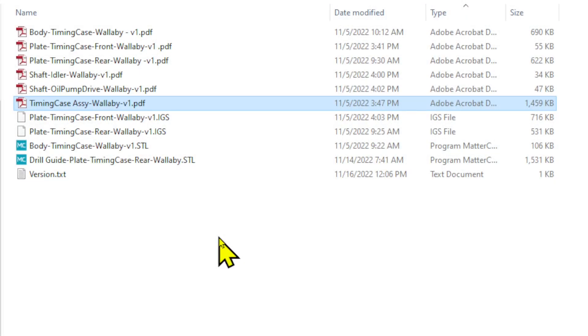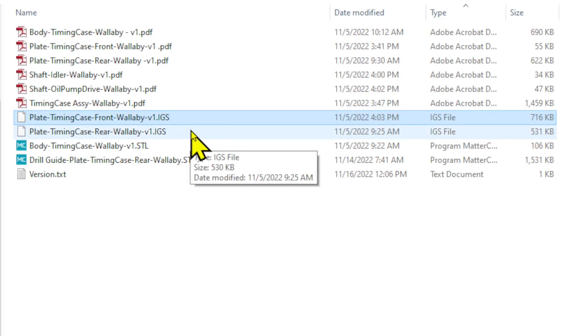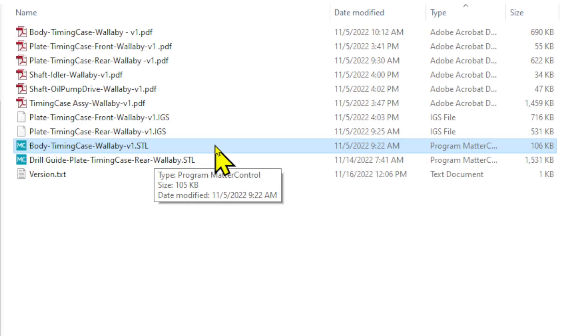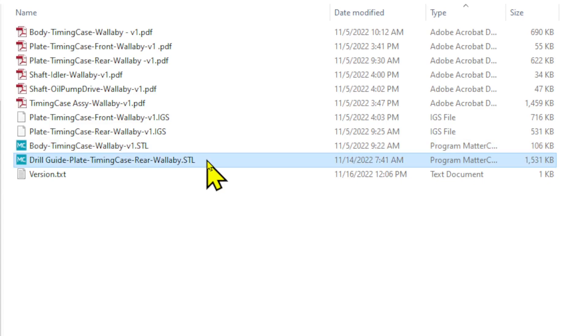If you're building your own Wallaby, you'll need to download the plans. They're available from my website, and I've put a link below. Open up the zip and you'll find a series of PDF files. This one here is the main assembly, the timing case. There's a couple of drawings for the rear plate and the front plate, and then there's a couple of shafts, and then the body itself. The IGES files are used in our CAM program. I'm using Fusion 360. The body timing case STL file is used to 3D print the timing case body. This drill guide can be 3D printed and used to ease the drilling of the holes if we're doing it manually. And finally, our version.txt file, which holds the information of the versions of all the documents.